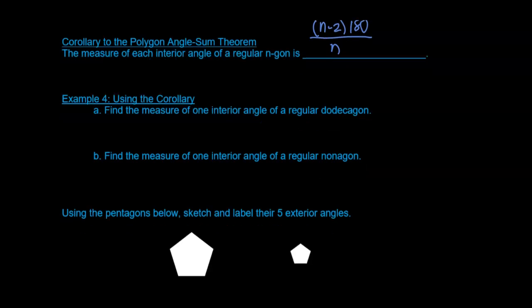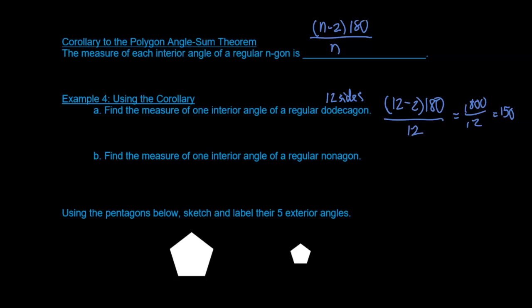Find the measure of one interior angle of a regular dodecagon. A dodecagon is a 12-sided figure. So we plug in 12: (12 minus 2) times 180 divided by 12. We have 10 times 180, which is 1,800, divided by 12, which gives us 150 degrees. So each interior angle equals 150 degrees.